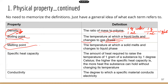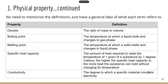Melting point is the temperature at which a solid melts and changes to liquid phase. So you can think of certain metals when they get really hot — they are going to melt. Next, we're going to look at specific heat capacity. Specific heat capacity refers to the amount of heat required to raise the temperature of one gram of a particular substance by one degree Celsius.